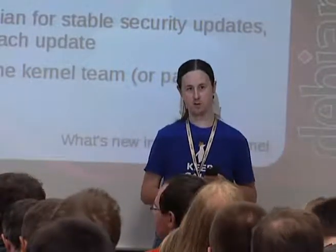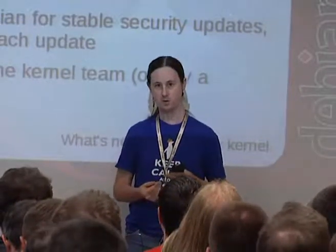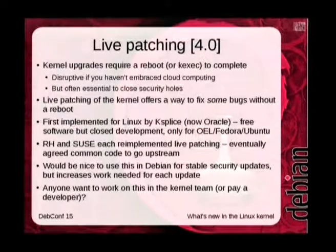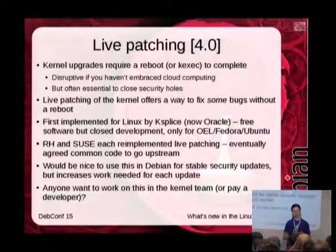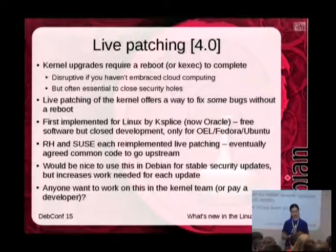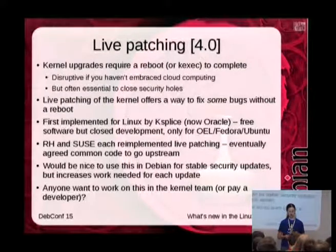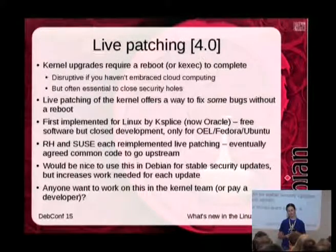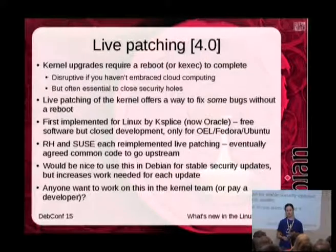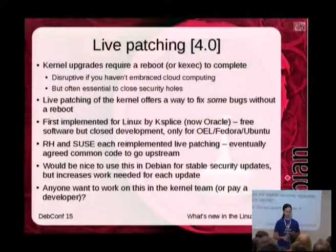That was implemented quite a while ago by a company called Ksplice with a product of the same name — they've since been bought by Oracle. Their patches are free software but the tools used to develop them are not, and they currently release patches for Oracle Linux, Fedora, and Ubuntu — not Debian, Red Hat, or SUSE. Red Hat and SUSE saw this as an important feature for their enterprise distributions and so implemented live patching again. Because they work within the community, they tried to get their implementations upstream at around the same time, went through discussion and compromise, and that happened in Linux 4.0.